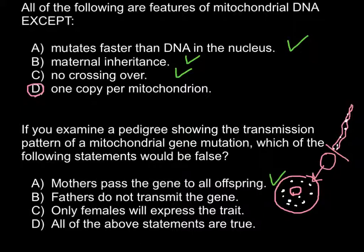So as you see, answer B — fathers do not transmit the gene — would also be a correct statement. And answer C — only females will express the trait — would be an incorrect statement, because the gender of the progeny depends on whether the sperm cell contains an X or Y chromosome, so the male defines the sex of the progeny, but mitochondrial inheritance is only maternal.